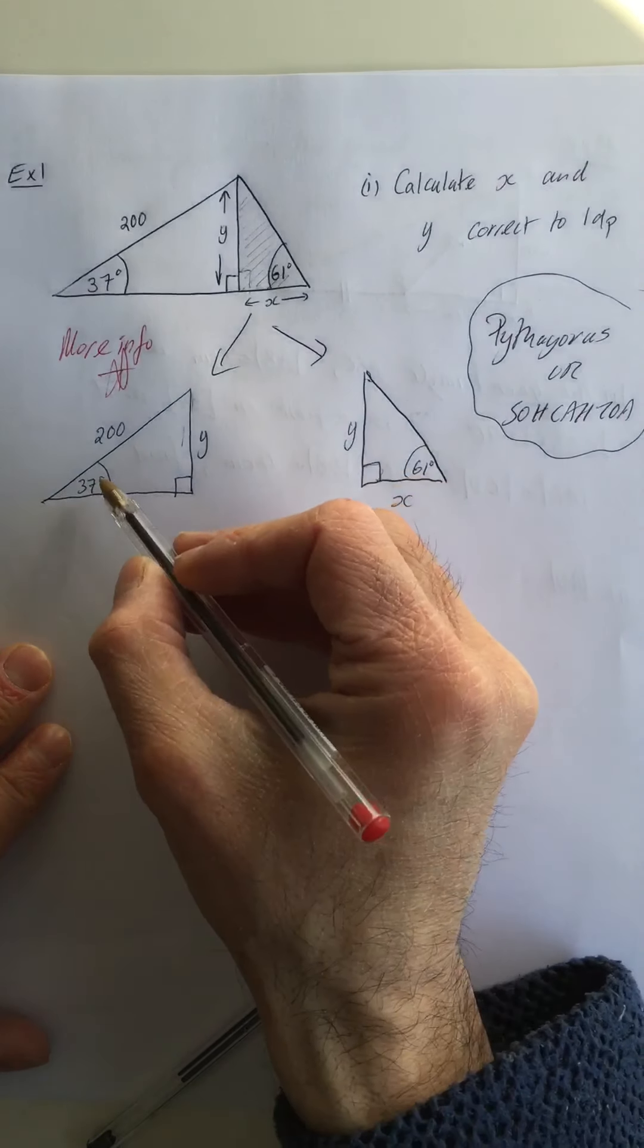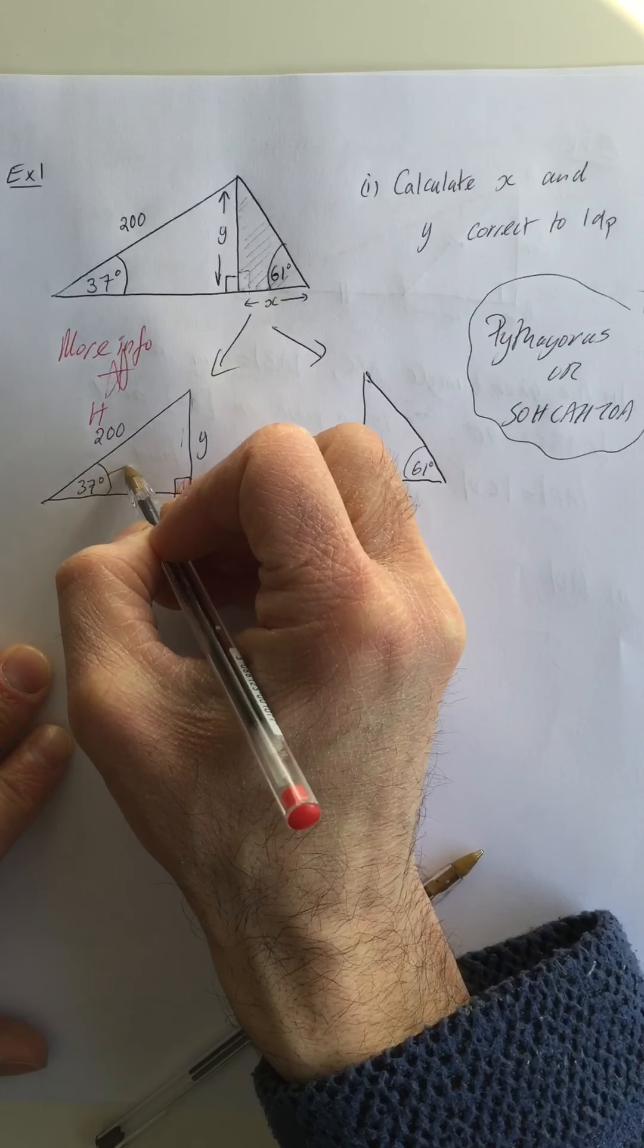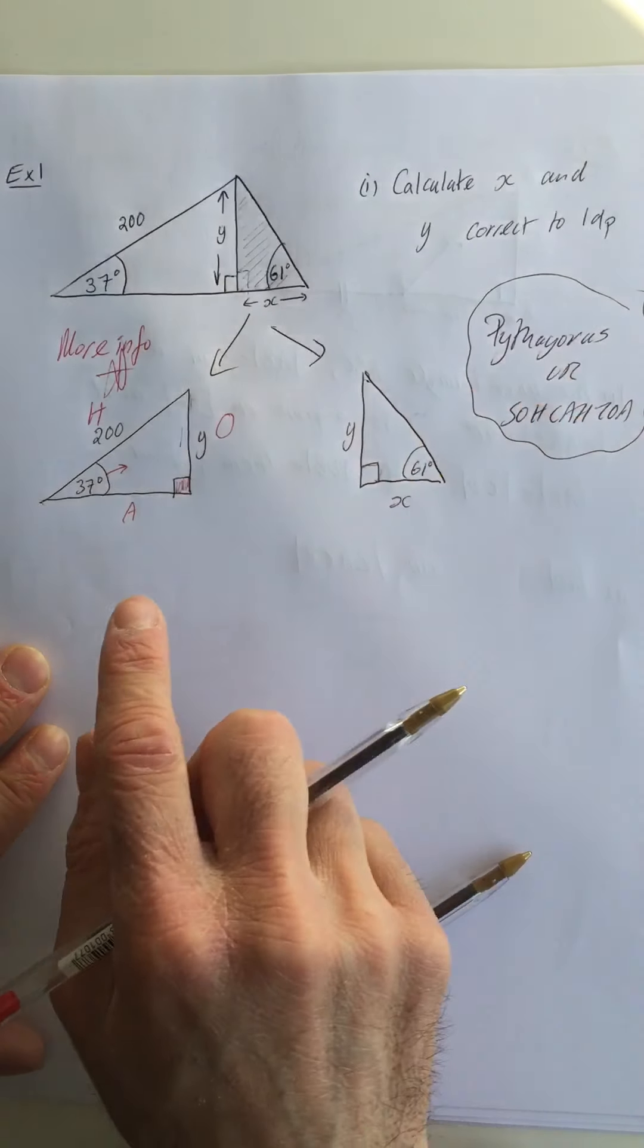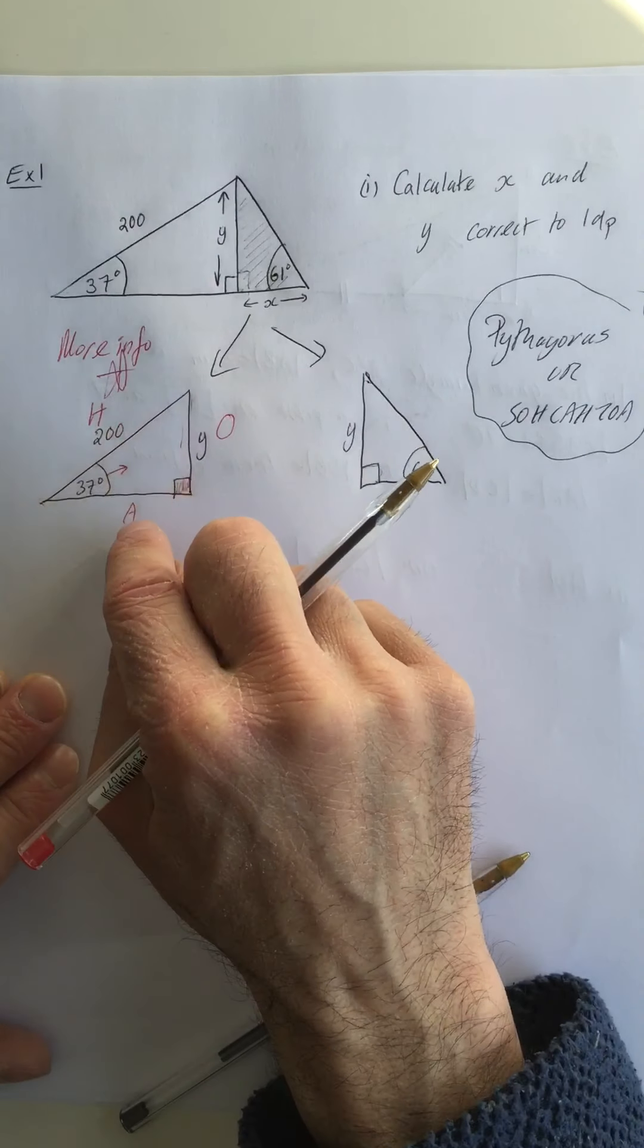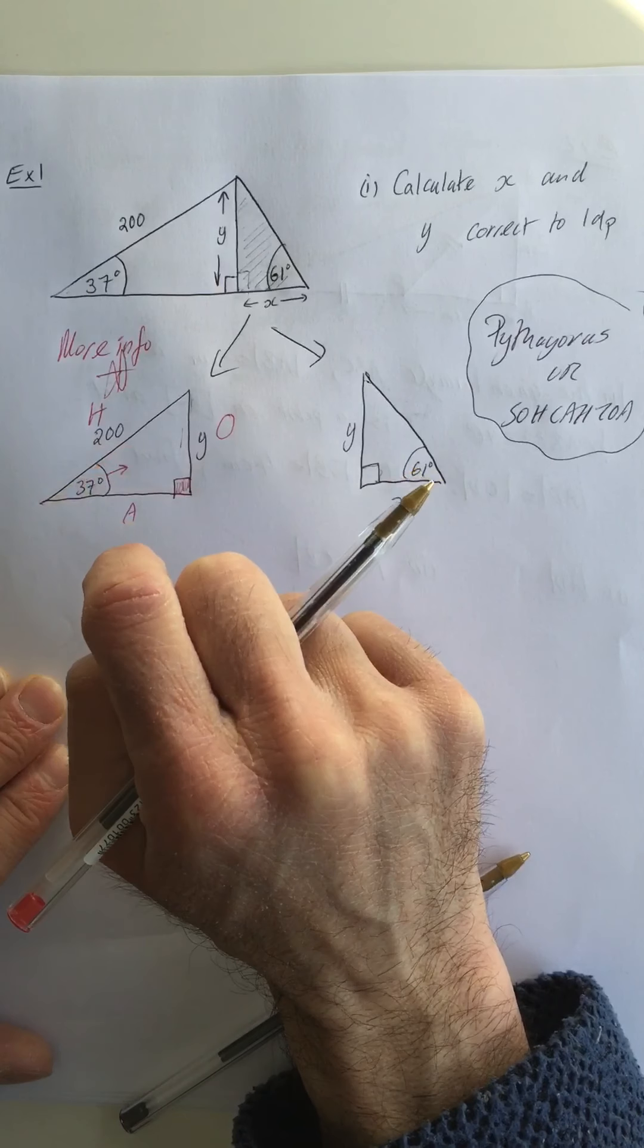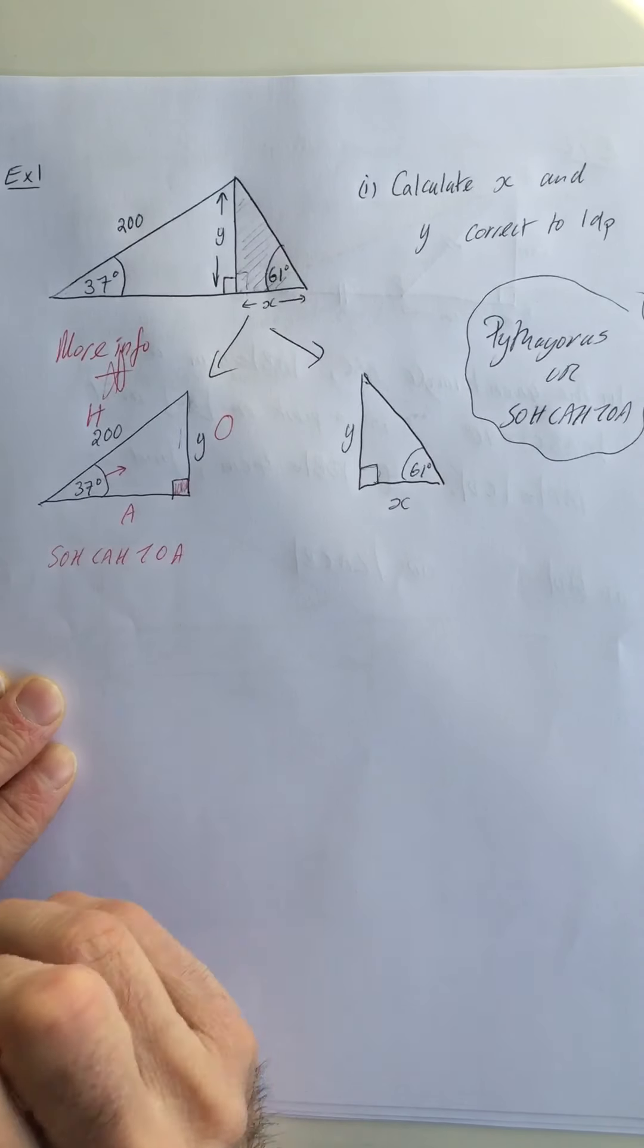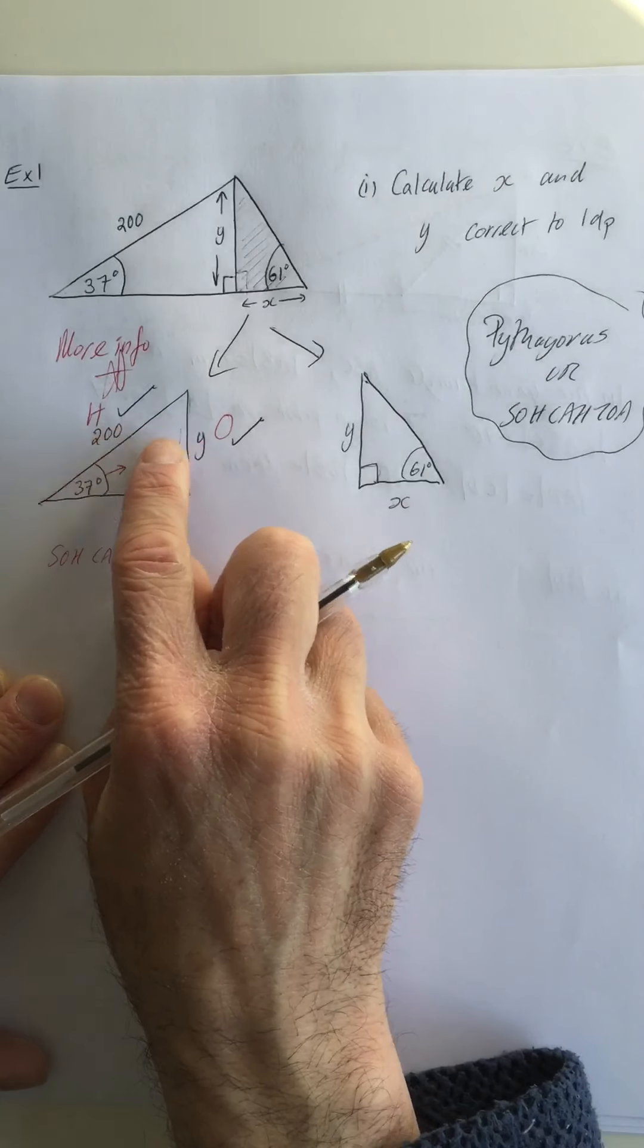So to start off, I label my triangle. Because this is a right angle, I call this H. And because 37 is the angle that I know, I'm going to call this over here O and this A. So I've got O, H, and A. I'm going to check: can I use Pythagoras's theorem here to find out what y is? Well, the answer is no. Why? Because I don't know this side. For Pythagoras's theorem to work, I need to know two of the sides. Here I only know one of the sides, so what I'm going to do is try and use SOHCAHTOA. Now we need to decide which one we're going to use.